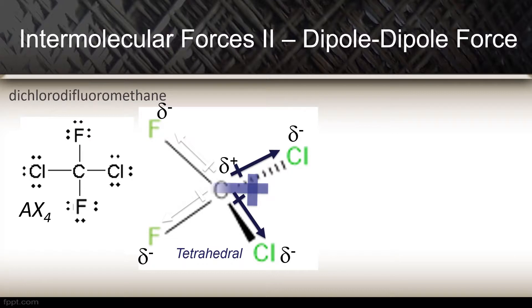An example of a polar molecule taken from a previous lecture is shown, dichlorodifluoromethane. The negative ends of this molecule will attract the positive end of a neighboring molecule, and this will continue creating a lattice of dipole-dipole bonding interactions.